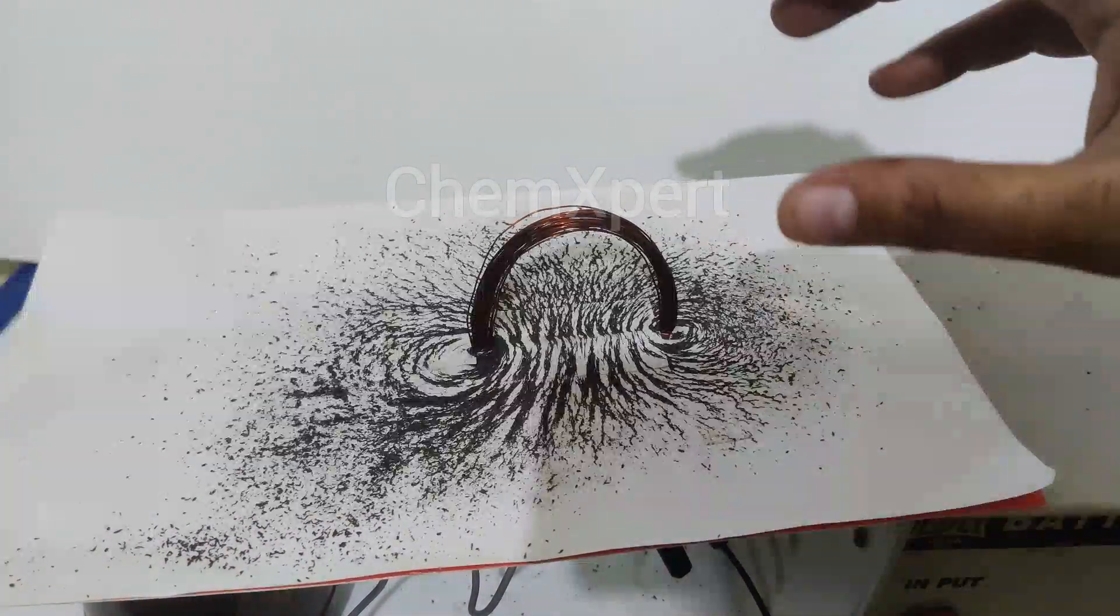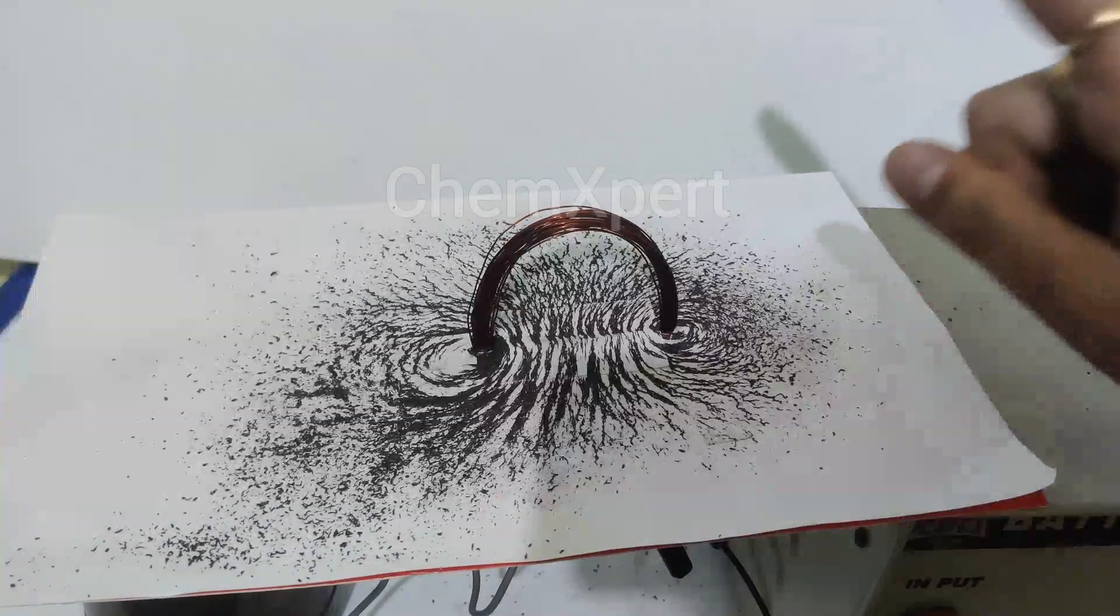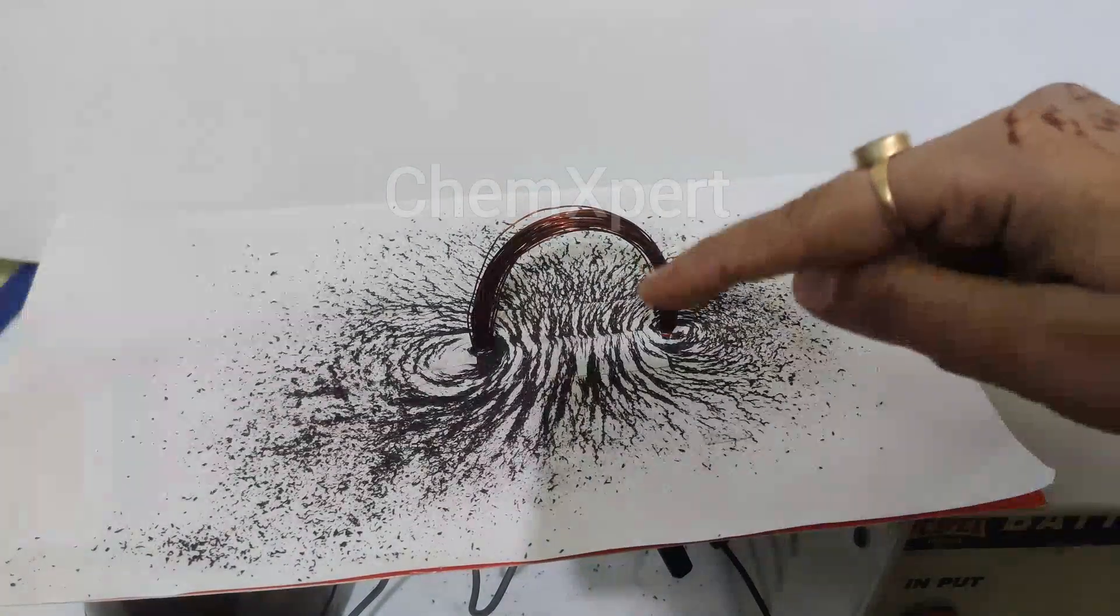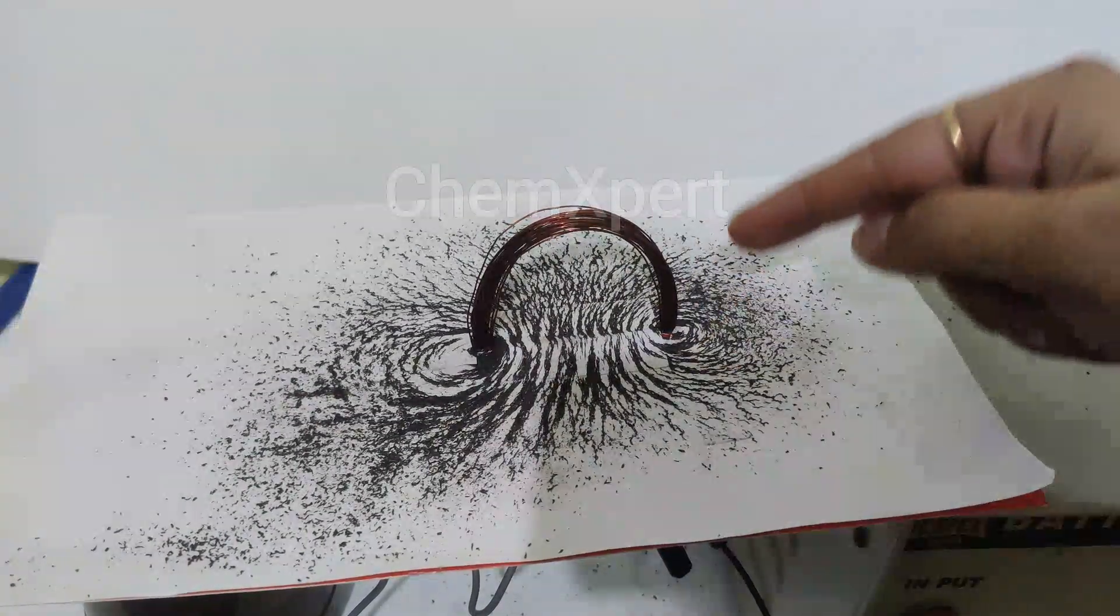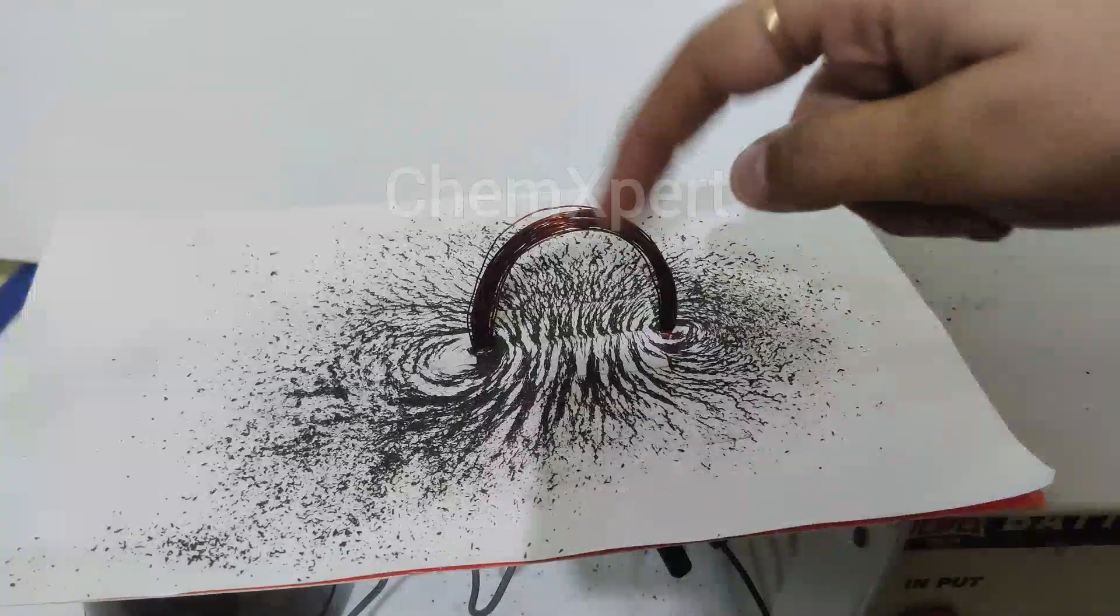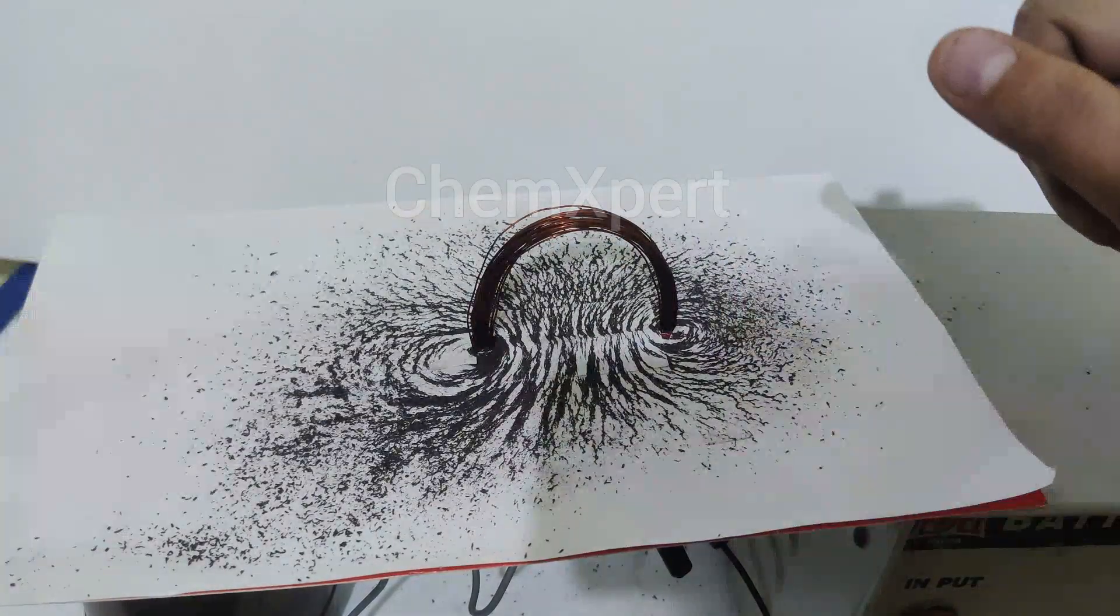The factors on which these magnetic field lines depend: first one is current, directly proportional to the current. The greater the current, the stronger will be these lines or the closer will be these lines.